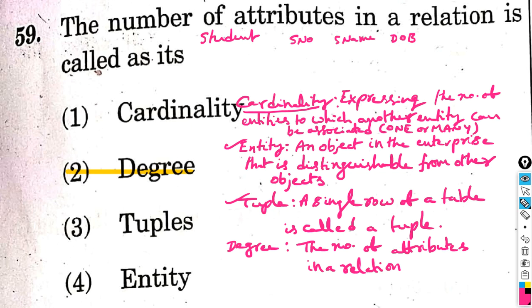Next, cardinality. Cardinality defines expressing the number of entities to which another entity can be associated. In a relationship, you can map one-to-one or one-to-many. For example: